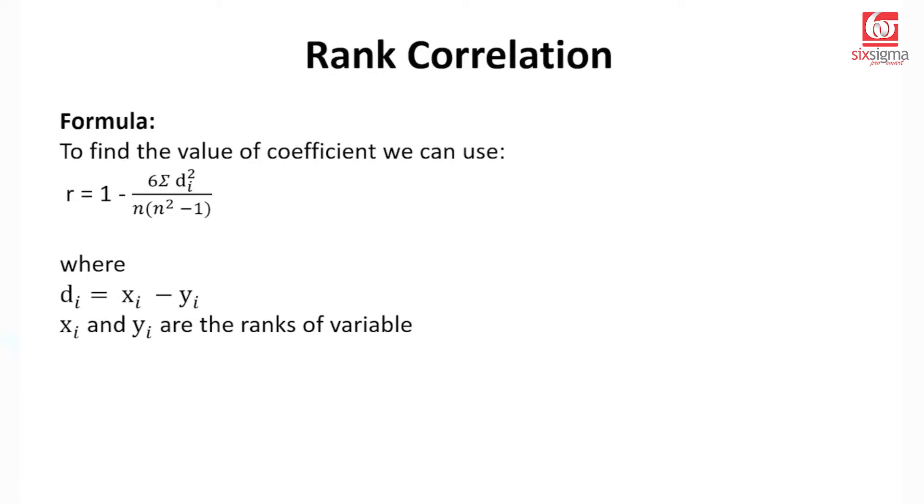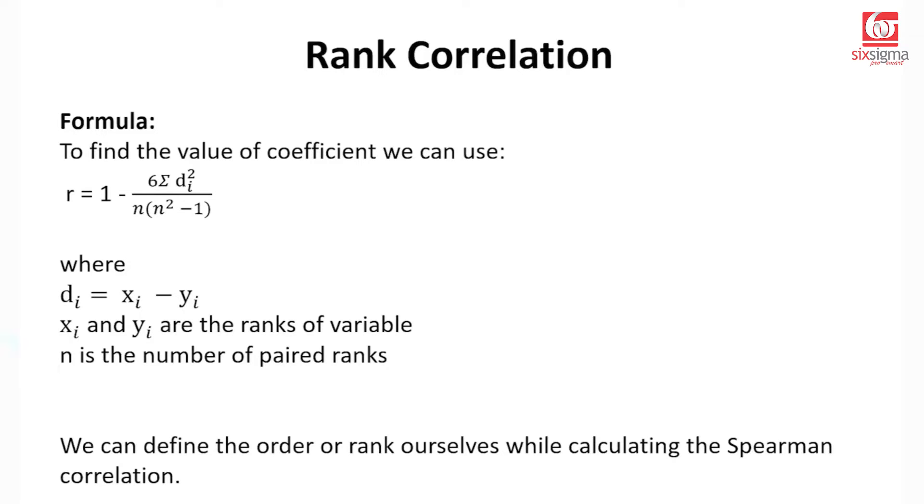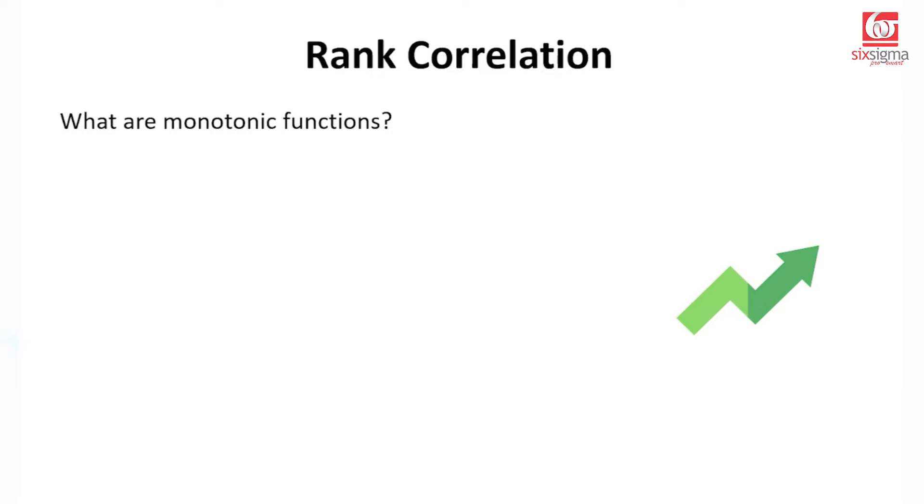These are paired differences. For every x, you have a corresponding y and we are taking a difference between their ranks. N here is the number of paired ranks and we can define the order of ranks ourselves while working on Spearman's correlation.